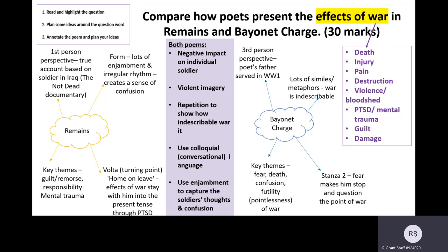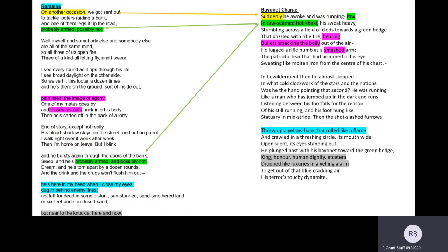Now I've jogged my memory, I can start to come up with some comparative points that pull together the two poems. For example, bullet point one: both poems have a negative impact on the individual soldiers. That's true of both, but they do it in different ways. In Remains it's written in first person to show us the remorse and make us empathise, whereas in Bayonet Charge it's written in third person, creating a sense that the reader is watching his suffering on the battlefield — and maybe reflecting the poet's attempt to write about an experience his father lived through but he didn't experience himself. So now we've got our ideas, we can move on to our annotations.